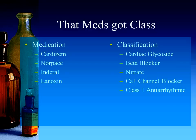Let's see how you did. Cardizem would be known as a calcium channel blocker, also known as a class IV antiarrhythmic. Norpace comes under the classification of a sodium channel blocker, which is a class I antiarrhythmic. Inderal is a class II antiarrhythmic, also known as a beta blocker. And the last one, Lanoxin — that's your cardiac glycoside coming from the digitalis plant. Hopefully you did pretty good on those.